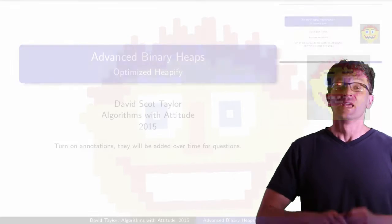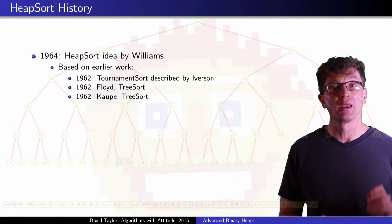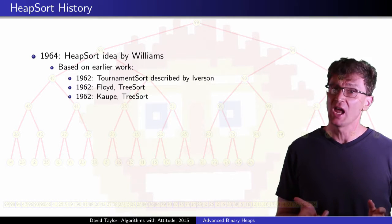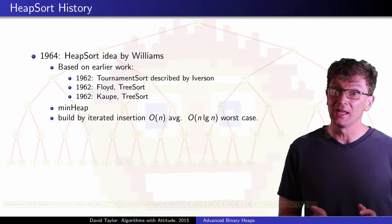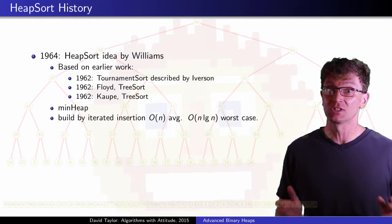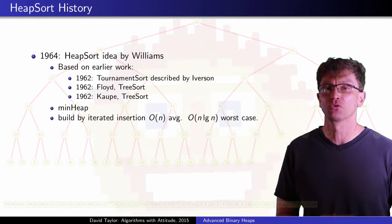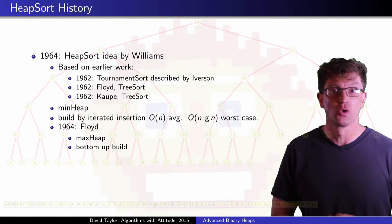A little history. Heapsort was introduced by Williams in 1964 based on some earlier work. A few changes: he used a min heap and also didn't use the linear time heap build operation, but those were rectified or revised by Floyd later in the year.